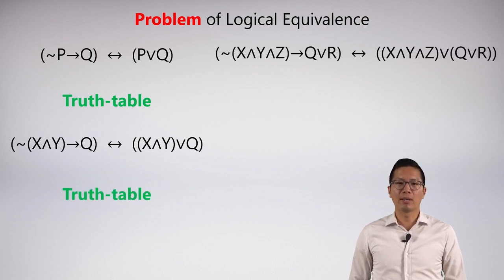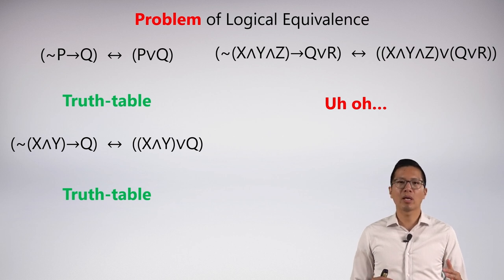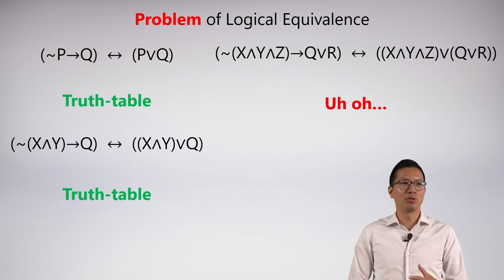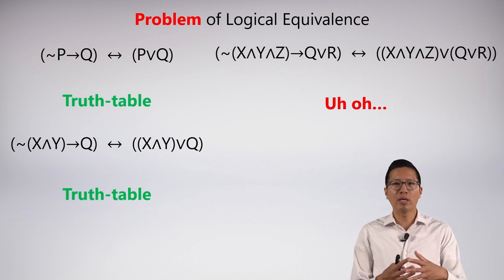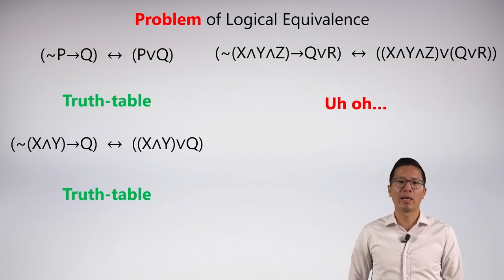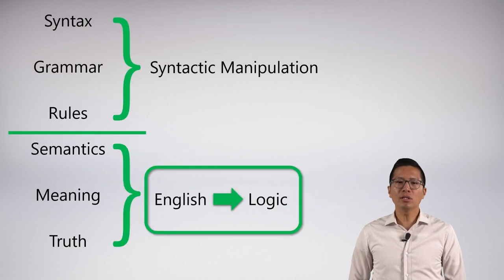How do I know these are logically equivalent? You can see the problem. If I have to do a truth table every time something looks logically equivalent, this is just impossible in practice. Especially once we have a lot of atomic letters, the truth table will explode to an unmanageable size. This is a limitation of our system right now.